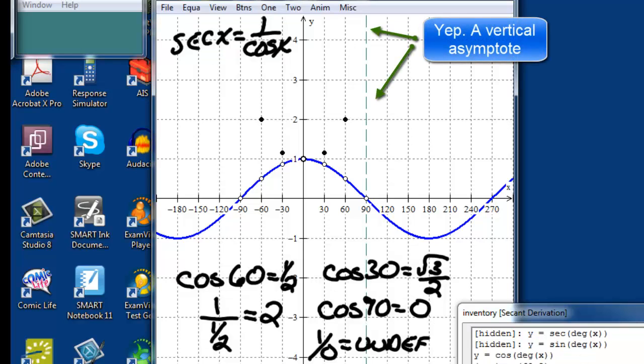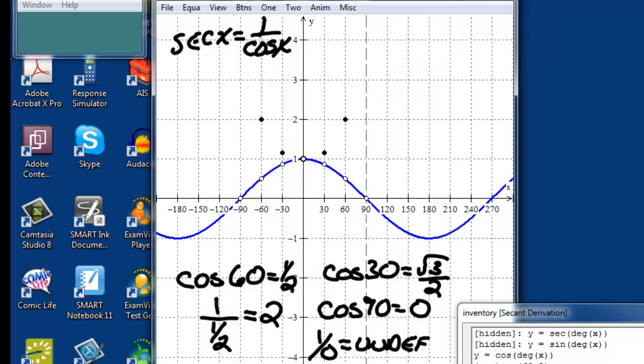And at negative 90, I'll see the same issue arise. Cosine of negative 90 is also 0. So again, we'll be undefined and we'll need another asymptote there at negative 90.